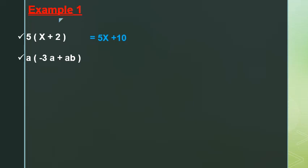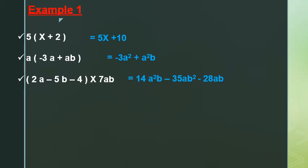That gives negative 3a squared plus a squared b. Number 3: (2a minus 5b minus 4) in brackets, multiplied by 7ab. We distribute 7ab by 2a, by negative 5b, and by negative 4, giving 14a squared b, then 7 by negative 5 equals negative 35ab squared, and 7 by negative 4 equals negative 28ab.